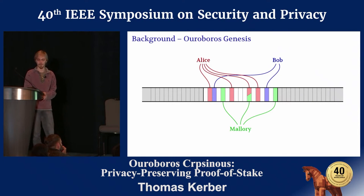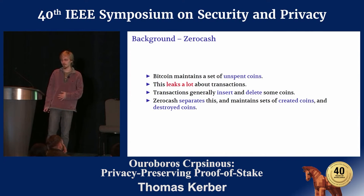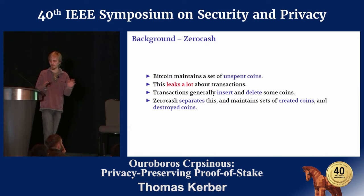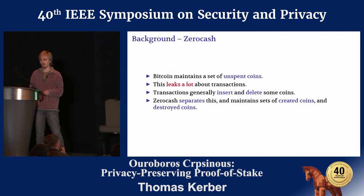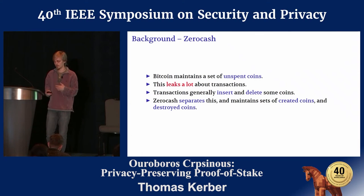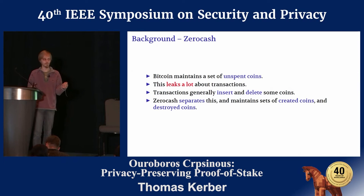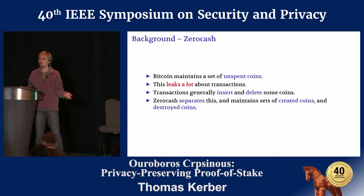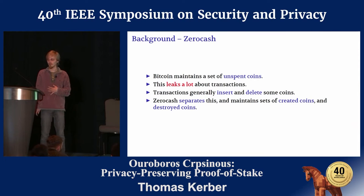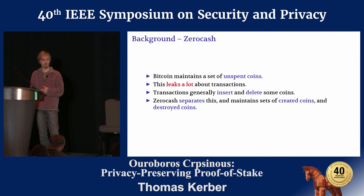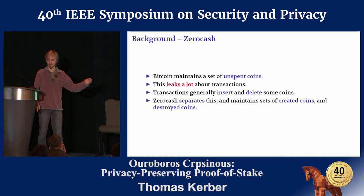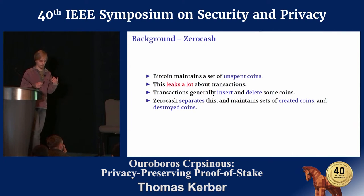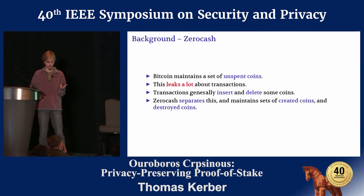On a separate side of the spectrum, Zerocash doesn't concern itself with the consensus layer at all — it's just a transaction system. It builds on Bitcoin's transaction system and makes it more private. Bitcoin tracks unspent transaction outputs: it keeps a set of coins which are unspent at any time, and a transaction removes something from this set and inserts something new. This is fairly simple, which is why it was adopted first, but as previous research in transaction linkability has shown, it is very non-anonymous and you can essentially de-anonymize transactions.